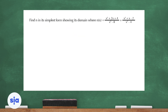Question 8: find n in the simplest form showing the domain. We are adding two fractions, and to add them they must have the same denominator. Important: before you find the common denominator, before you cross out and simplify, you have to find the common domain. So let's factorize each of the numerators and denominators if possible.